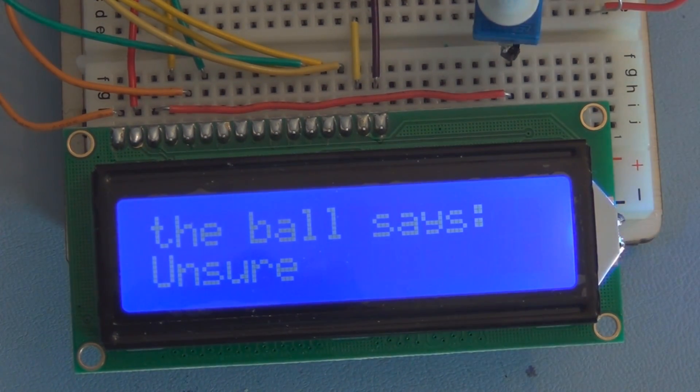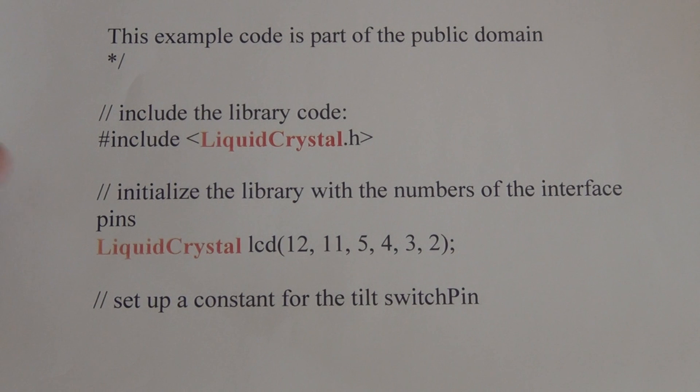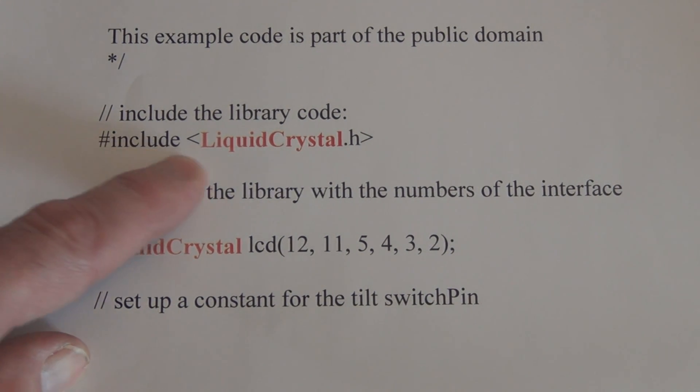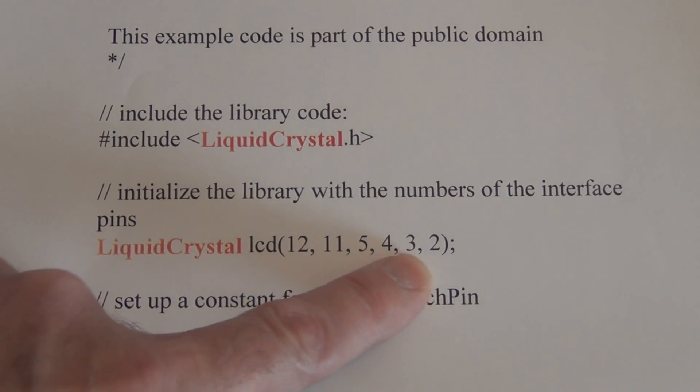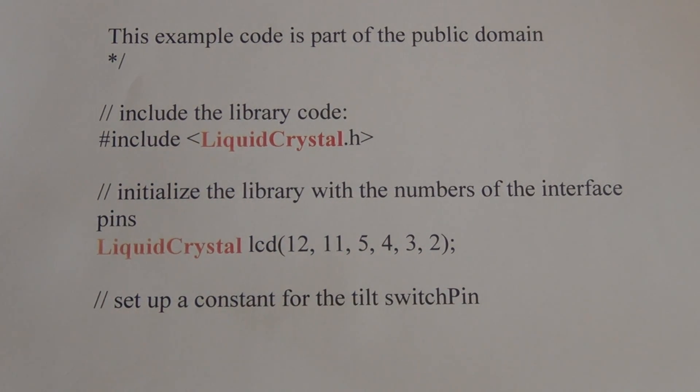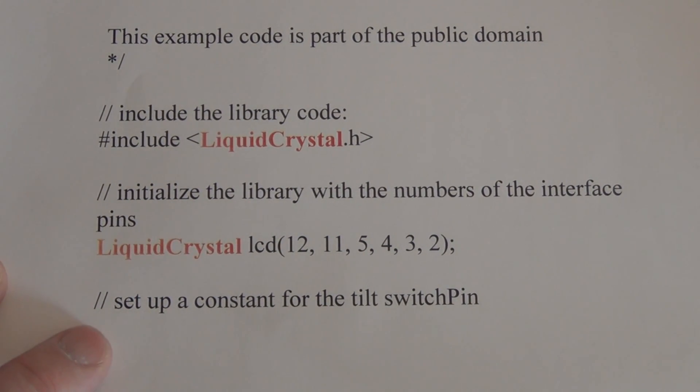So let's take a look at the program. The first thing we do is import the liquid crystal library with include liquidcrystal.h. And then we have to initialize the library with the numbers of the interface pins. So we have to tell it what pins we're going to be using. And we have LiquidCrystal LCD pins 12, 11, 5, 4, 3, and 2.